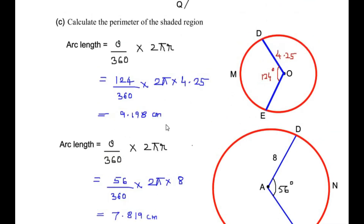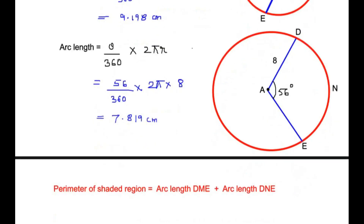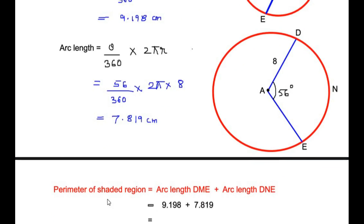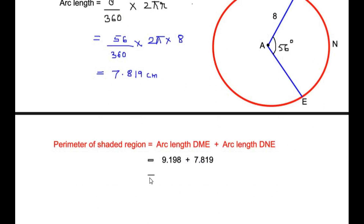The total perimeter is the sum of arc length DME and arc length DNE: 9.198 + 7.819 = 17.017, which we can round to 17.0 centimeters. So this is the perimeter of the shaded region.